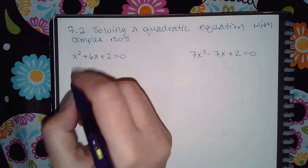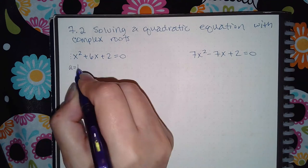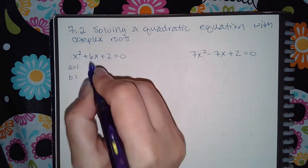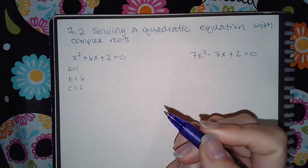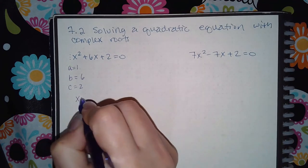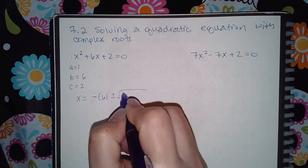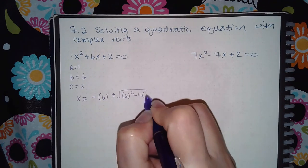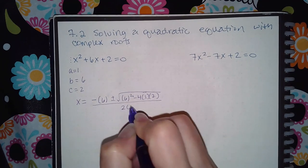So if I apply the quadratic formula, my a here is going to be an invisible positive 1, b is going to be a positive 6, and c is going to be a positive 2. And as I plug that into the formula I get negative b plus or minus b squared minus 4ac all over 2a.